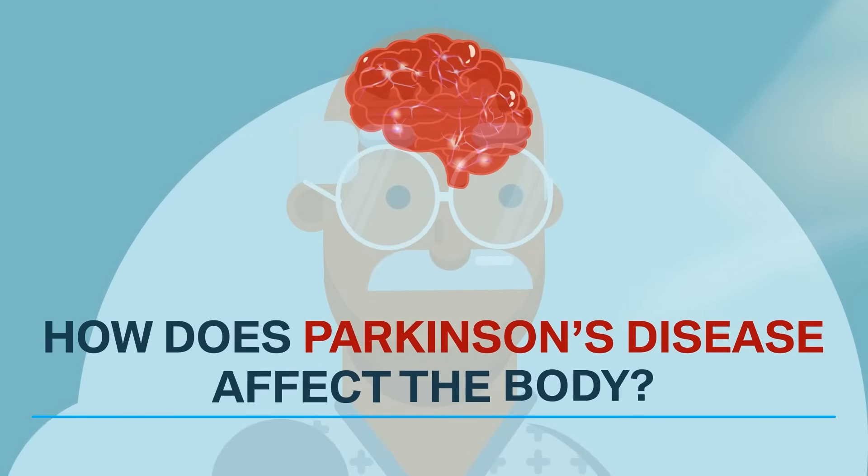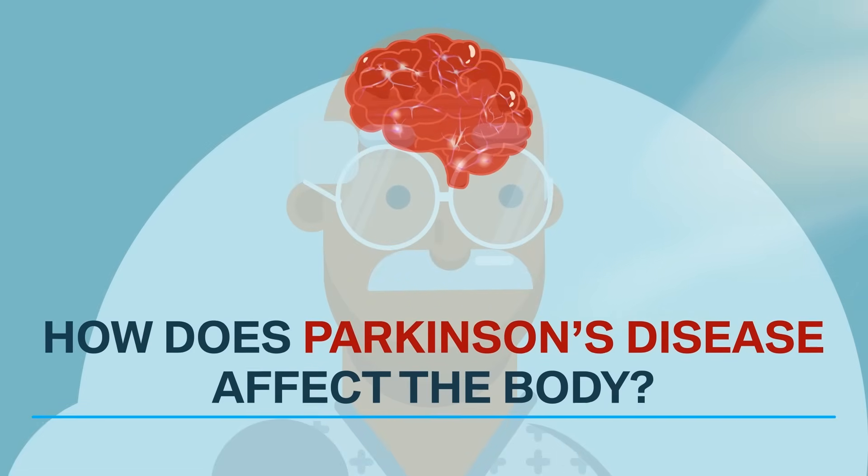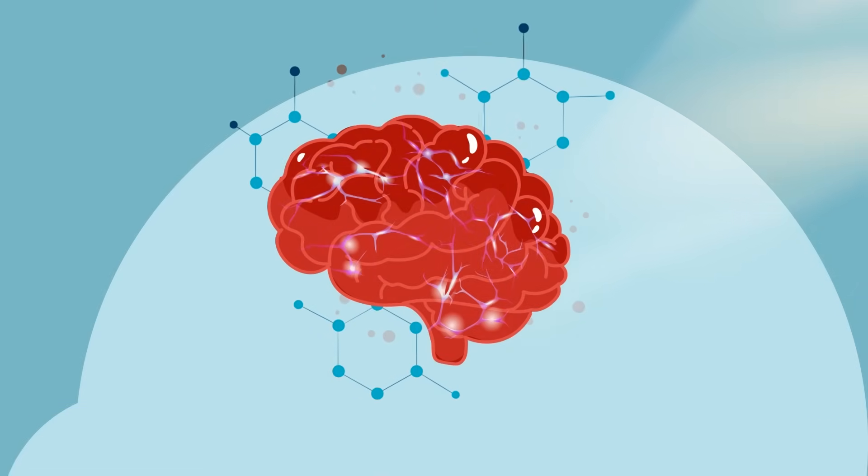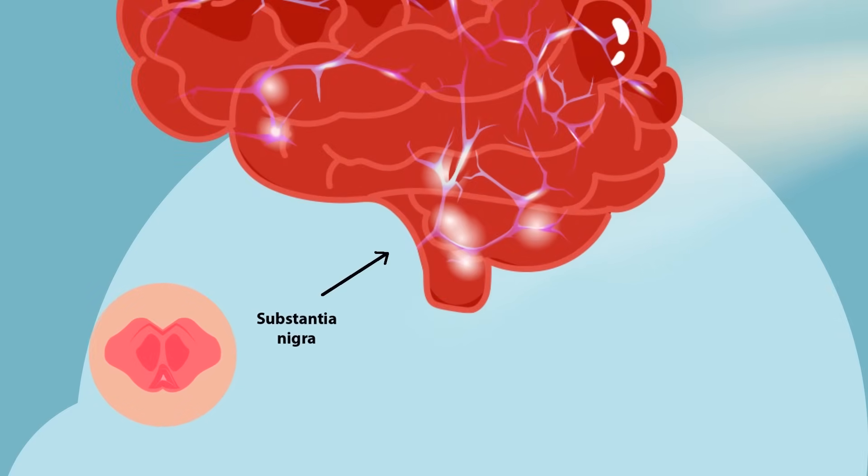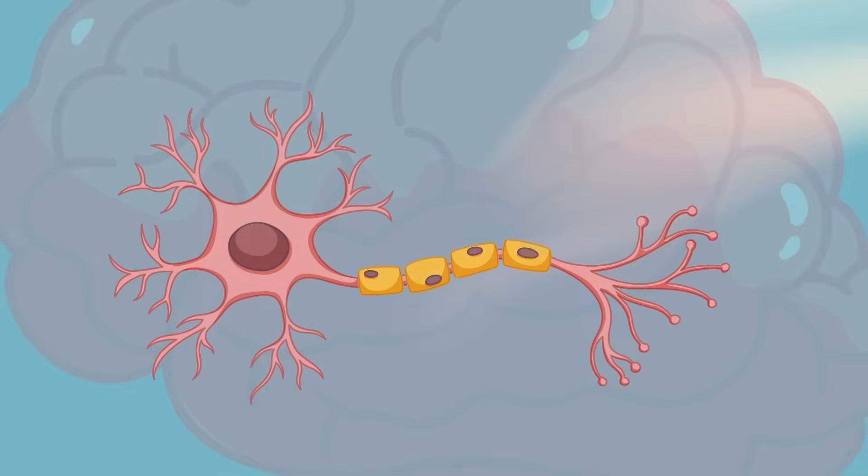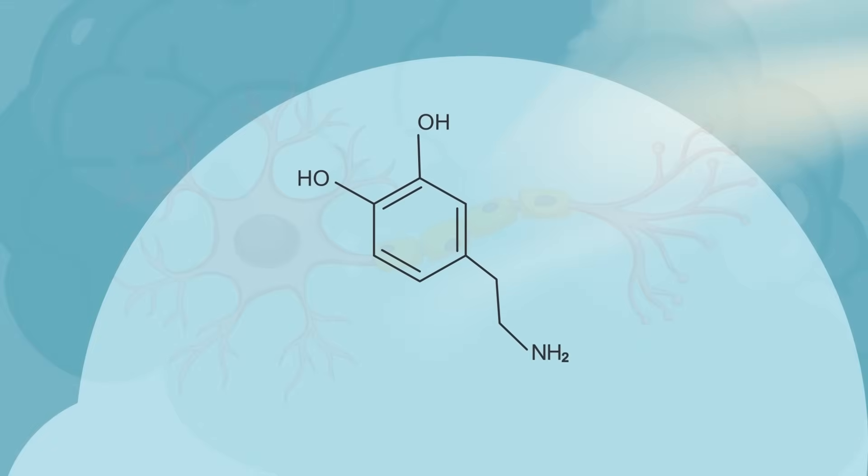How does Parkinson's disease affect the body? When you have Parkinson's disease, brain cells in a particular part of your brain called the substantia nigra start to die. Those brain cells make a neurotransmitter called dopamine.